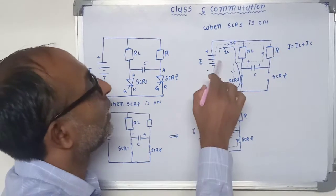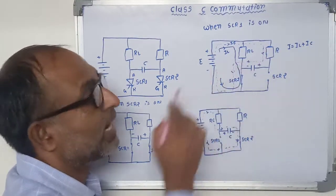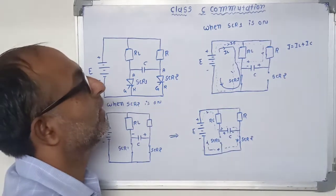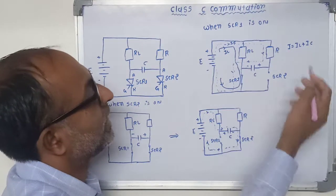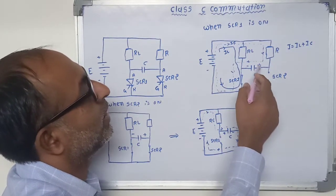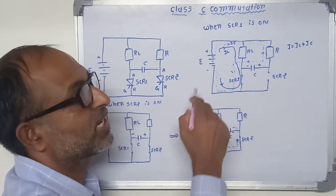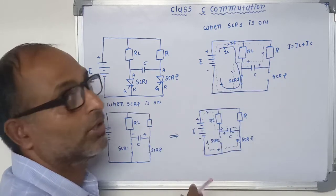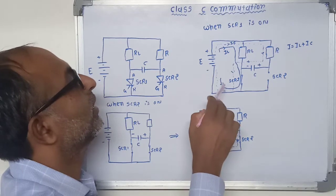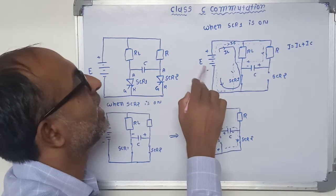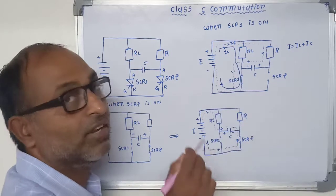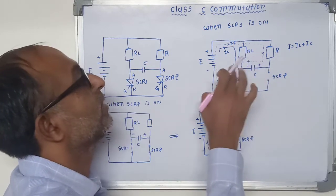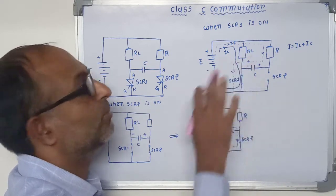Now due to this, capacitor starts to charge with right side plate positive and left side plate negative. Now capacitor is fully charged, that means E voltage is available across this capacitor, that means your supply voltage.